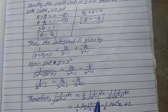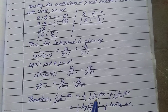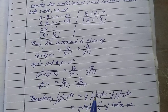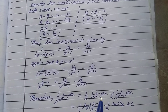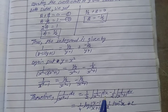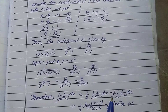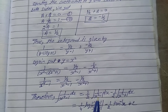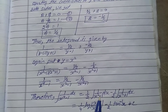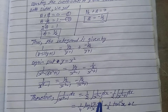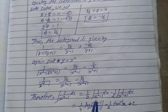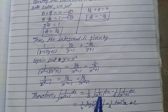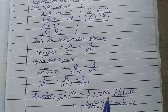For the integration of 1 upon x square minus 1, the formula used is: integration of 1 upon x square minus a square equals 1 upon 2a times log mod of x minus a upon x plus a. Applying this formula with a equal to 1, the integration of 1 upon x square minus 1 equals 1 by 2 log mod of x minus 1 upon x plus 1.